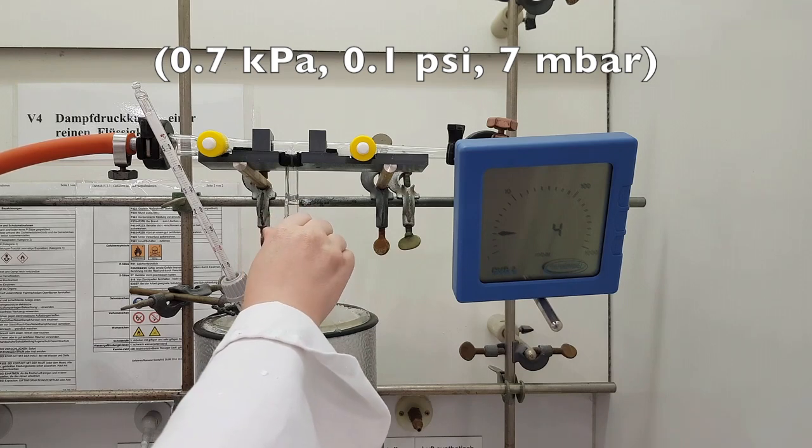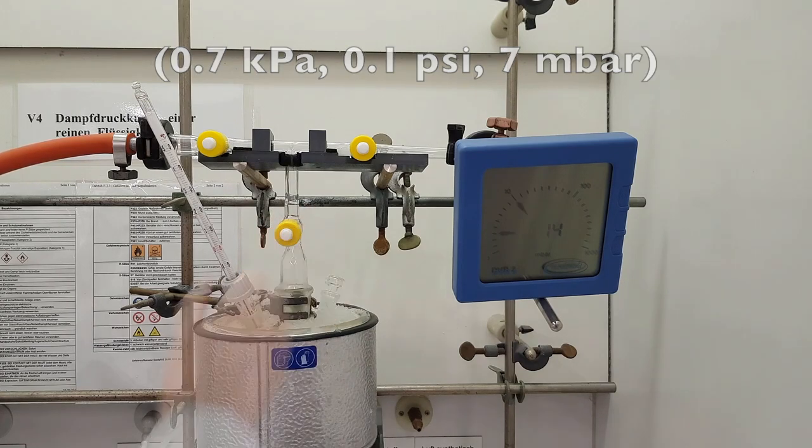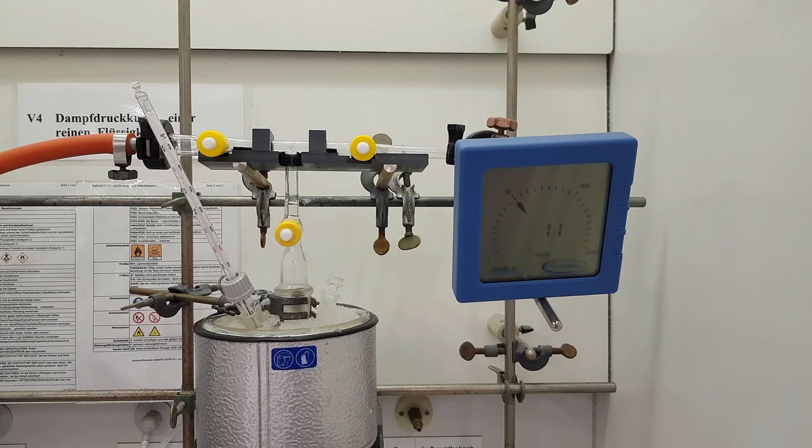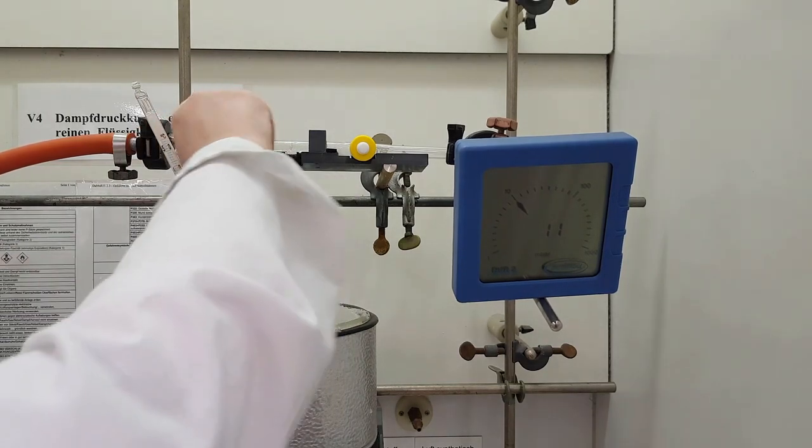The liquid starts to boil. The gaseous methanol replaces the air in the round bottom flask. Close stopcock 3 and switch off the vacuum pump.